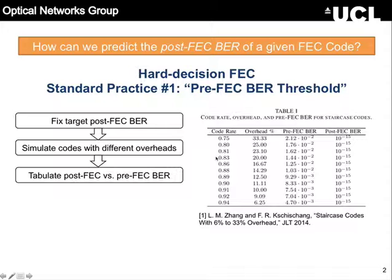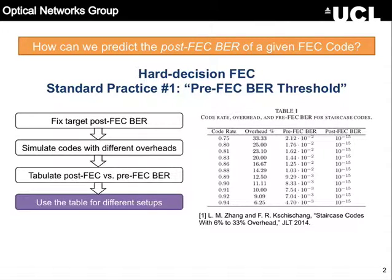You do this once, you have this table, you publish it or you print it, you bring it to your lab, and next time you run a different experiment or a different simulation, you go to your lab or your simulation, measure the pre-FEC BR — say it was 8.33 — then you come to this table and say there is a code with 11.11% overhead that can bring that bitrate down to 10 to the minus 15.